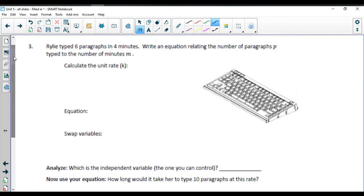Number three. Riley typed six paragraphs in four minutes. So we're going to do six paragraphs in four minutes. Paragraphs per minute. Six divided by four is going to give me 1.5. So that's my K value. Y equals 1.5X.